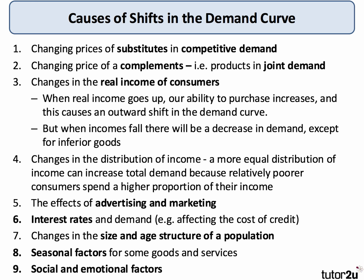There are other factors that can clearly cause shifts in demand. The effects of effective, persuasive advertising and marketing. The level of interest rates can affect the demand for products, particularly those bought on credit. The population can affect demand — not just the total size, affected for example by natural population growth and by migration, but also the age structure will affect both the level and the pattern of consumer demand. Seasonality comes in too — there are often strong seasonal factors affecting demand for different goods and services. And for those interested in behavioural economics, social and emotional factors are increasingly seen as factors affecting the demand curve.